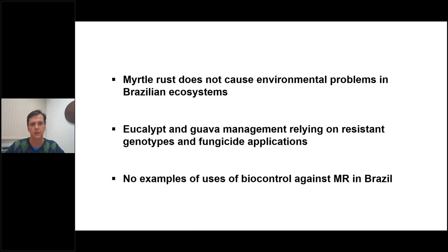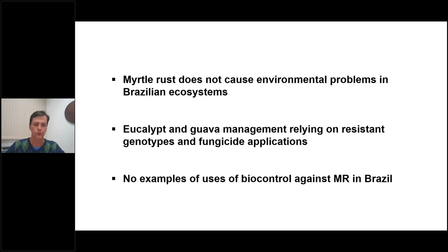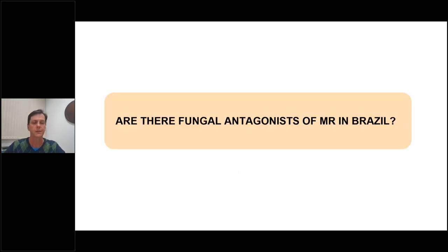Unlike New Zealand and Australia, myrtle rust does not cause environmental problems in Brazilian ecosystems. Eucalyptus and guava management rely on resistant genotypes, fungicides, and fungicide applications. Unfortunately we don't yet have a product that can be used as a biocontrol agent against myrtle rust in Brazil — hopefully we will be able to provide one.